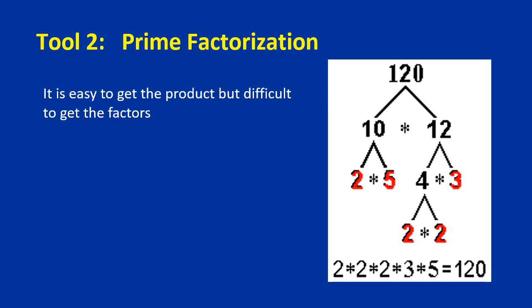The second tool is prime factorization. For our trapdoor function, we want something easy to compute in one direction but difficult to reverse. Getting the product of two numbers is easy, but factoring a large number back into its primes is difficult. Let's watch the following video to see how prime factorization is used in RSA.